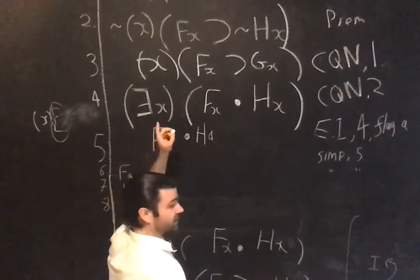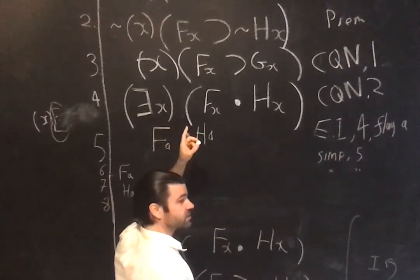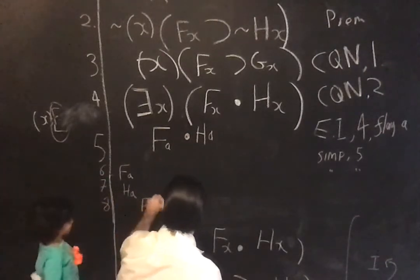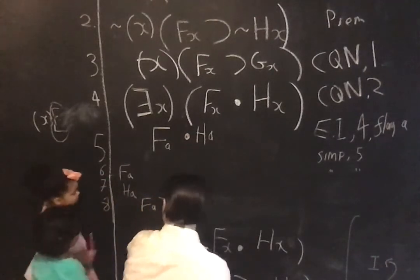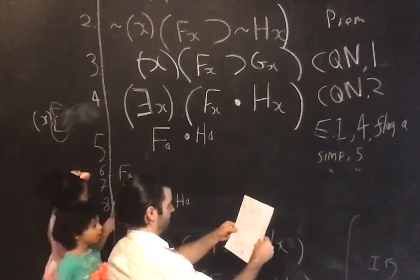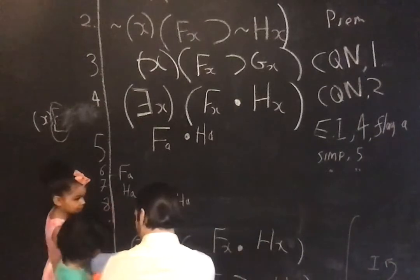But universal instantiation, again, I delete the quantifier, and I replace the variable with the same instance, so what do I get? I get F, A, hook, H, A. Let's see, mate. Let's see. You made a mistake, it's F6. Otherwise, it's pretty good.